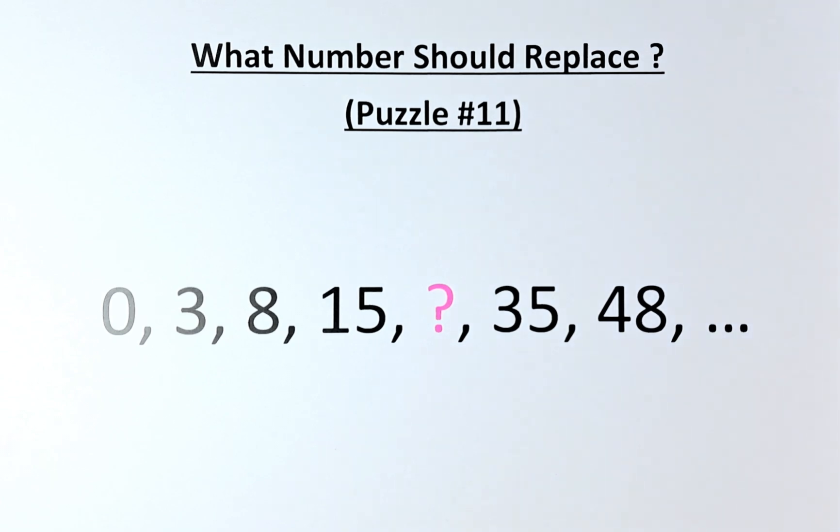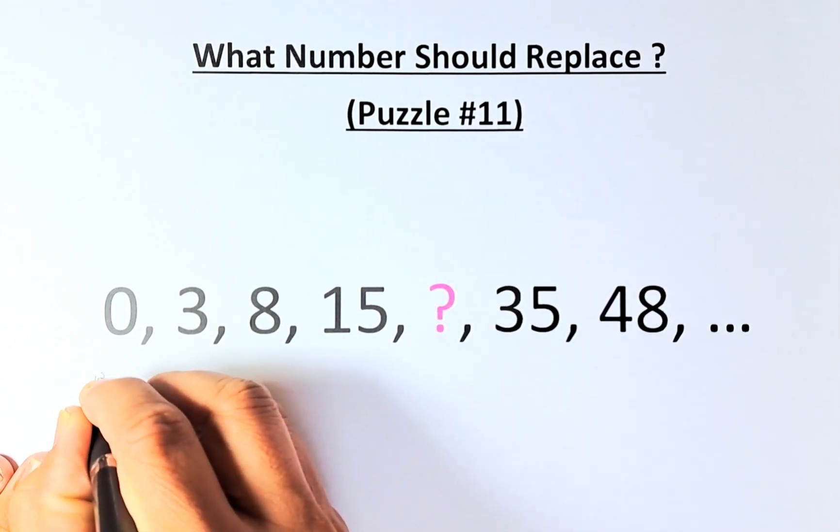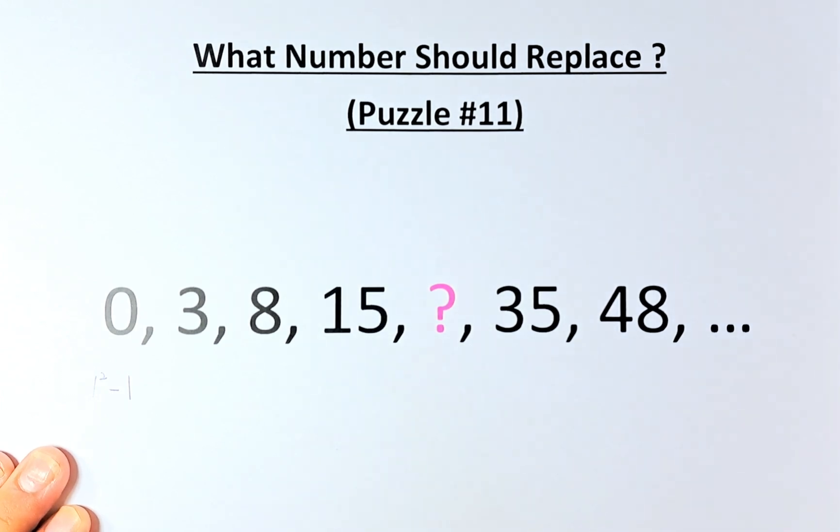The solution is as follows. From 0 to 3 to 8 to 15, there are many ways to do it but the best way is squaring the number. 0 is actually 1 squared minus 1. 1 squared is 1, 1 minus 1 gives you 0.